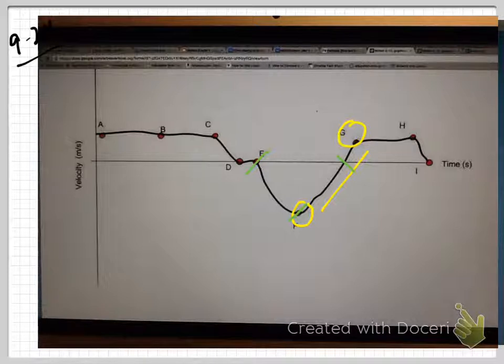Because, remember, it's speeding up when the velocity is traveling away from zero. When the velocity, when the magnitude of the velocity is getting larger. So, you know, at point E, velocity is zero. At point F, it is a magnitude greater than zero. Remember, magnitude is like absolute value. So, it doesn't matter that it's in a negative velocity.